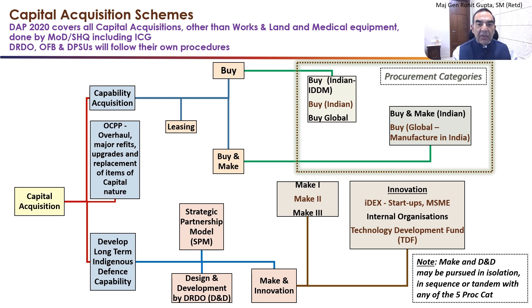Capital Acquisition is divided into three major parts. The first is Capital Acquisition, which is basically meant for the short-term to medium-term. At the bottom is the development of long-term indigenous defense capability. In the center are the other Capital Procurement Procedures, which are primarily overhaul, major refits, upgrades and replacements of items of Capital Nature. Note, this is a new introduction in DAP 2020.